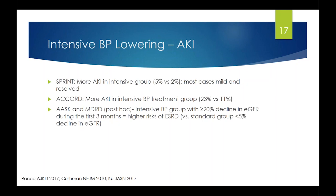A recent post-hoc analysis of the AASK and MDRD trials — both in patients with CKD comparing intensive versus less intense blood pressure targets — showed that patients in the intensive group with more than a 20% decline in eGFR during the first three months had a higher subsequent risk of end-stage renal disease compared with standard group patients without that eGFR decline. This was a potentially concerning signal, though it was a post-hoc analysis.